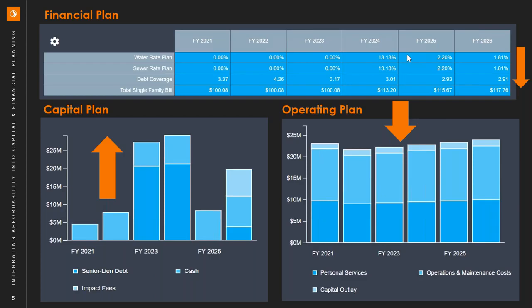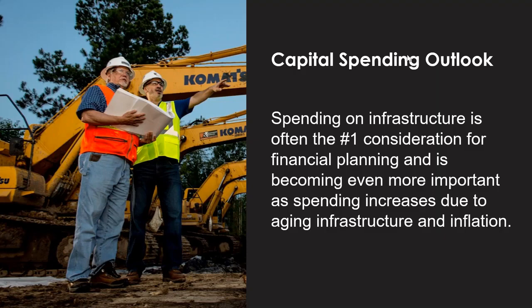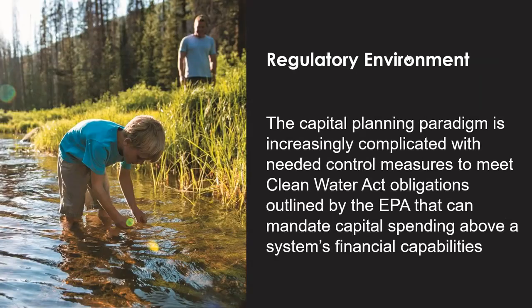Communities can evaluate the rate consequences of capital decisions, and that capital component really tends to drive a lot of the discussion. This is not surprising — for many communities, spending on infrastructure is the focal point of their financial management planning process. Operations tends to be relatively stable by comparison to capital, which is seeing significant increases as communities grapple with aging infrastructure and now enter a period of inflation risk on materials and construction costs.